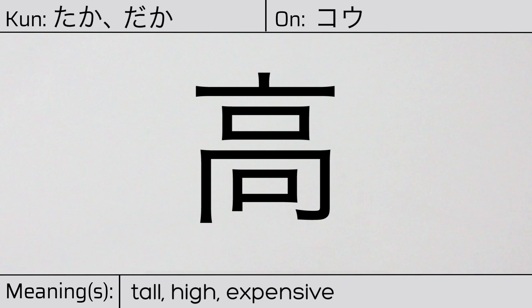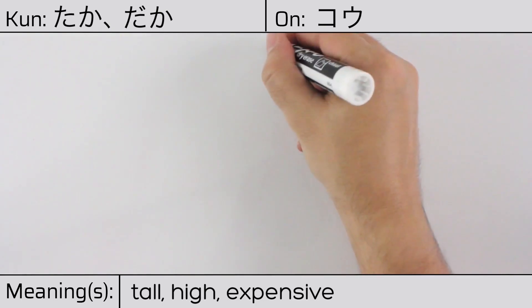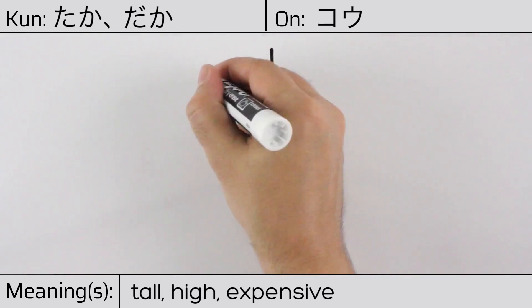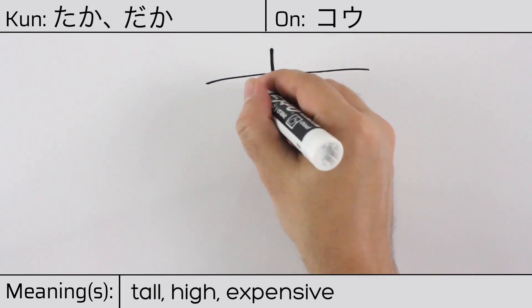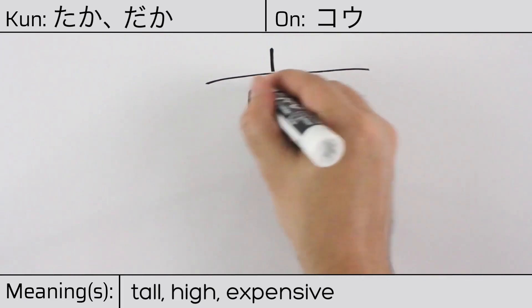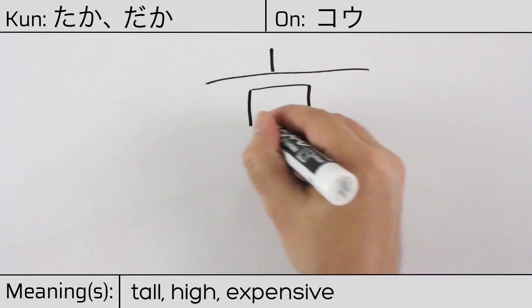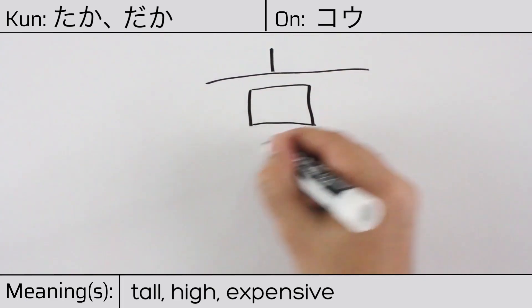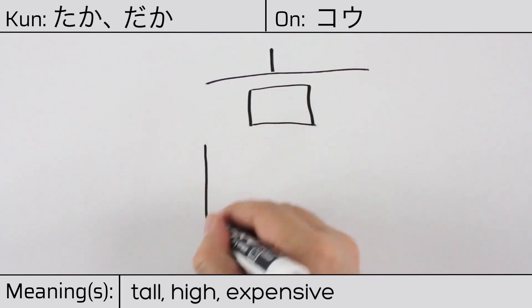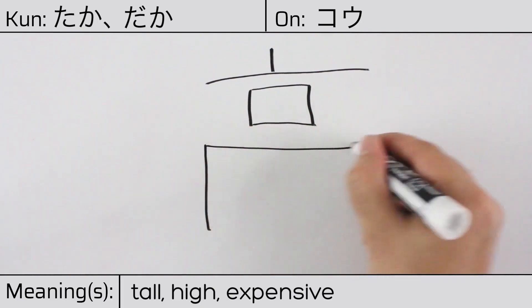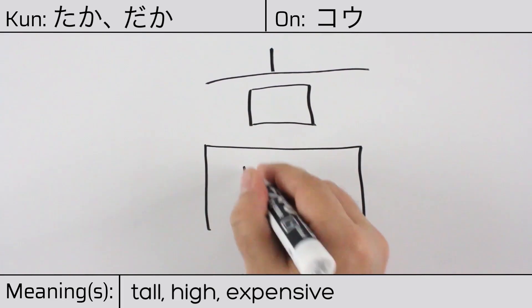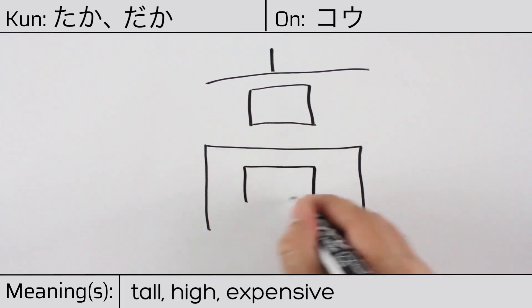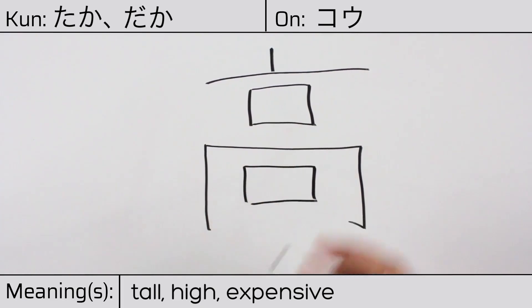Here is the stroke order: ichi, ni, san, shi, go, roku, shichi, hachi, kyu, jiu.